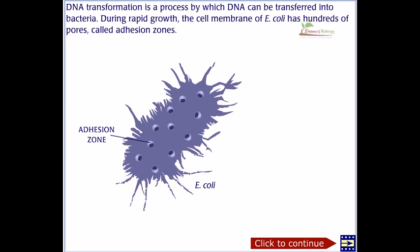DNA transformation is a process by which DNA can be transferred into bacteria. During rapid growth, the cell membrane of E. coli has hundreds of pores called adhesion zones. You can see in this picture these are the adhesion zones.